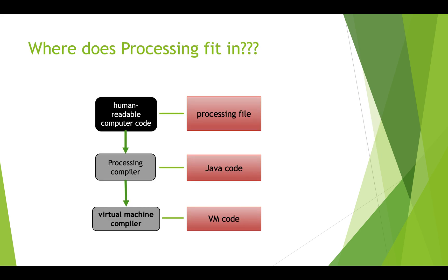You may be wondering: that's Java, but what about processing? In our class we're going to be using processing — that's our human readable code. The processing compiler is actually going to create Java code, which is also human readable, and then that's going to be sent to the virtual machine compiler, which will then be able to run on various platforms.